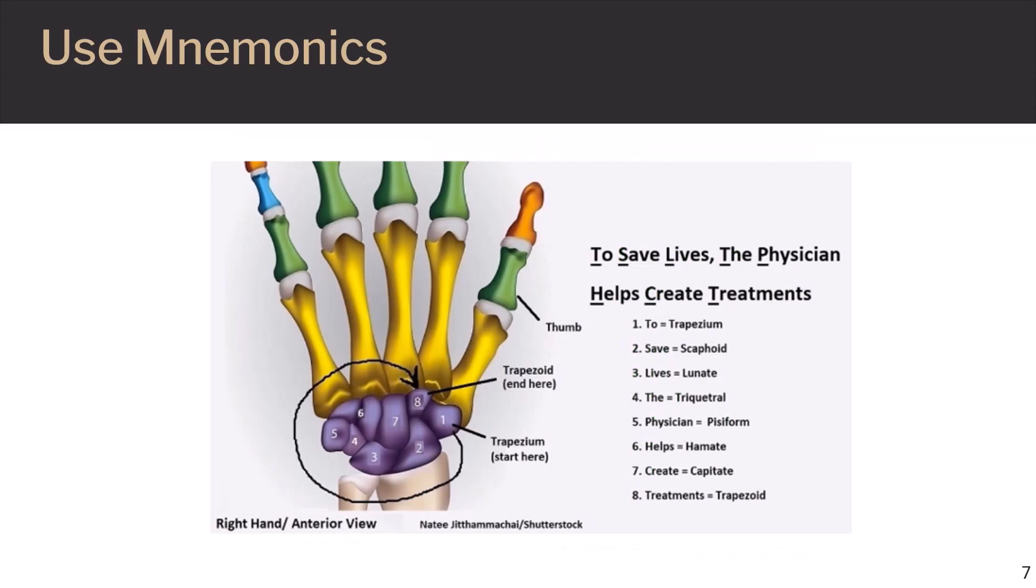The mnemonic on this slide can help students remember the bones in the wrist. To save lives, the physician helps create treatments. 2 is the trapezium, save is scaphoid, lives is lunate, the is triquetrol, physician is pisiform, helps is hamate, create is capitate, and treatments is the trapezoid bone. And you can see it goes in a clockwise fashion.